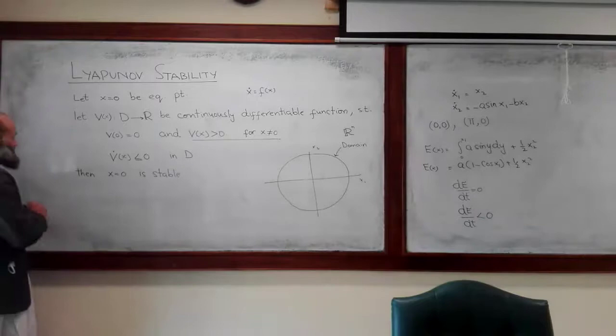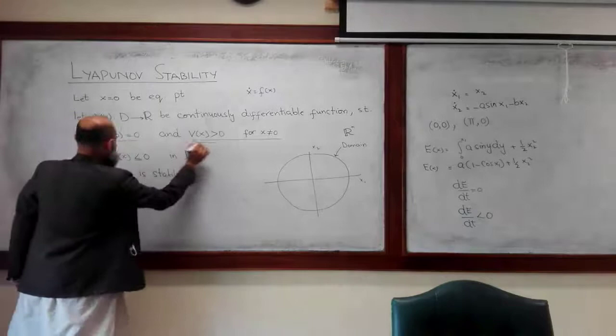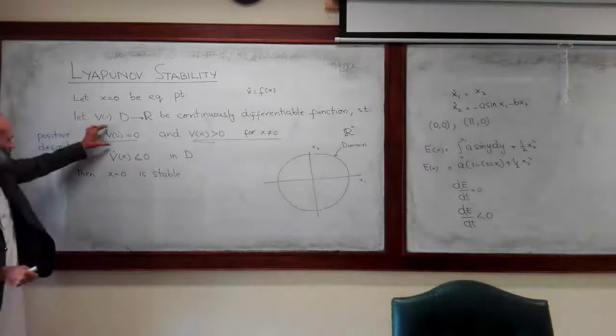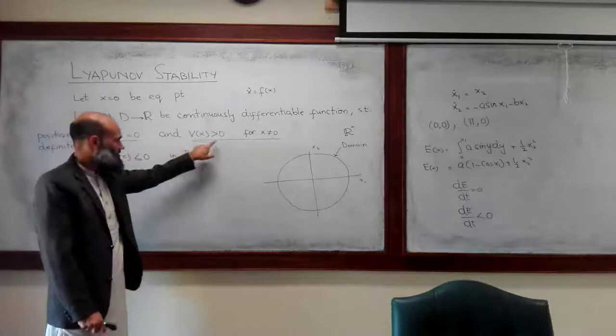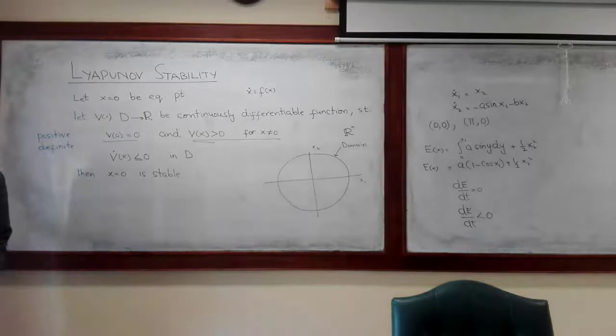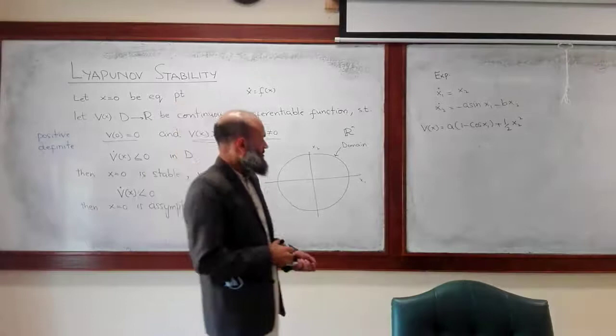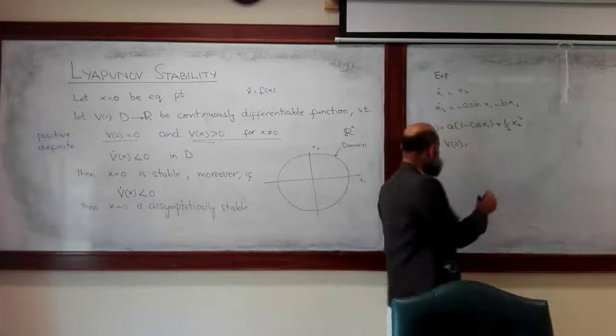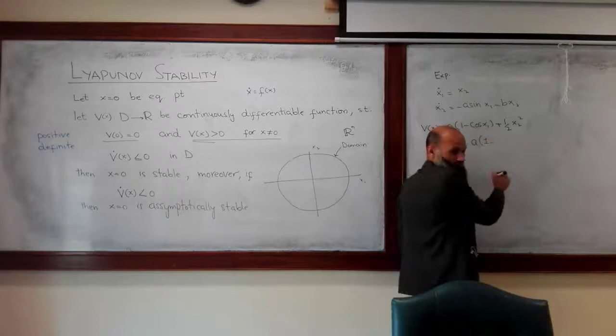This function which satisfies these two properties — that V(x) = 0 for x = 0, and V(x) > 0 for x ≠ 0 — is called a positive definite function. For example, what is V(0)? That is, if we substitute x = 0: